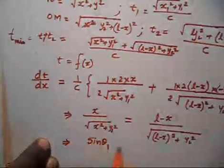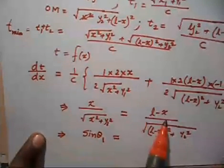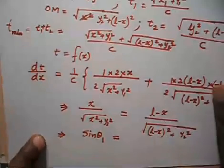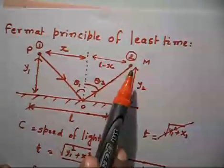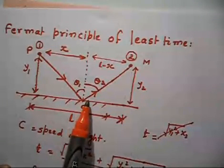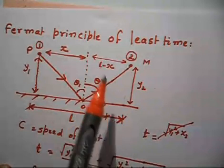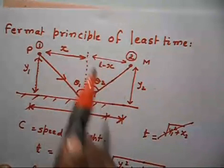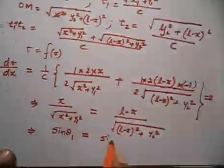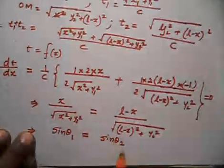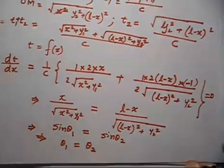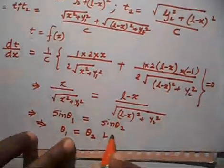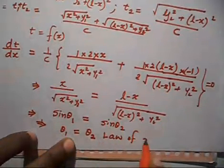On the right-hand side, (L−X) divided by that distance is sin(theta2). So sin(theta1) = sin(theta2), which implies theta1 = theta2. This is the law of reflection.